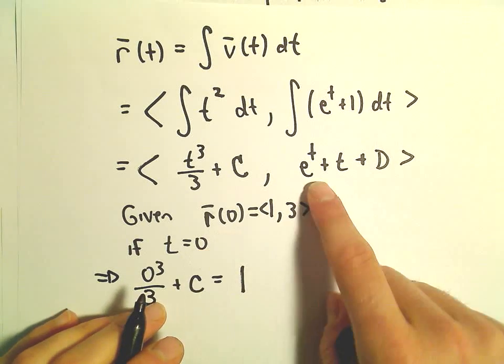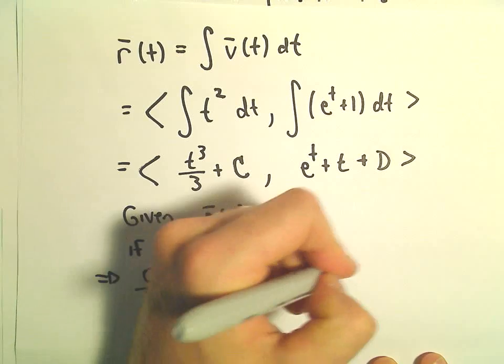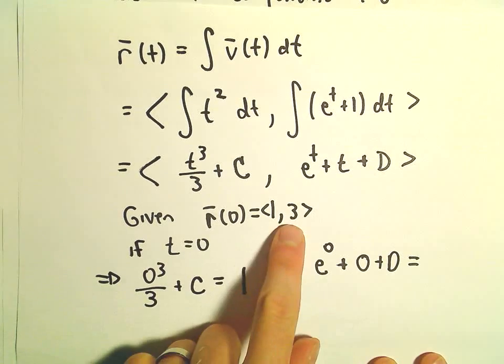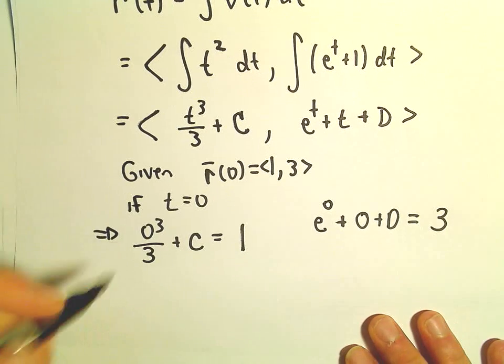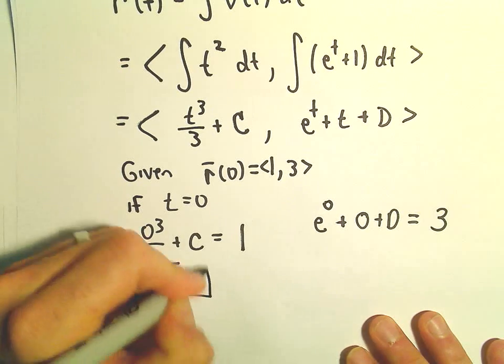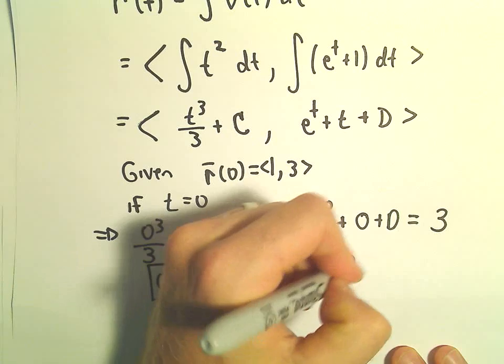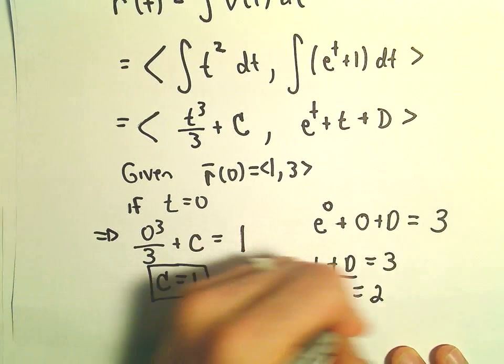And likewise, if we plug in t = 0, we would get e⁰ + 0 + d, which would have to equal 3. Well, 0³/3 is just zero, so we get c = 1. e⁰ is 1, so 1 + d = 3. If we subtract, we'll get d = 2.